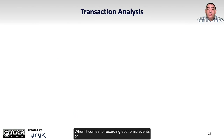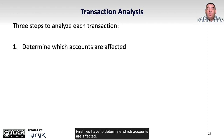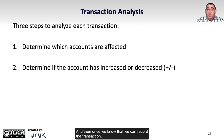When it comes to recording economic events or transactions into the accounting system, there are three basic steps involved. First, we have to determine which accounts are affected — for example, does this transaction include cash or something else? Next, we need to determine if the account has increased or decreased. So if our transaction does include cash, is cash going up or down? And then, once we know that, we can record the transaction.